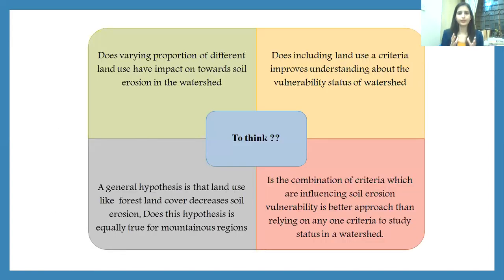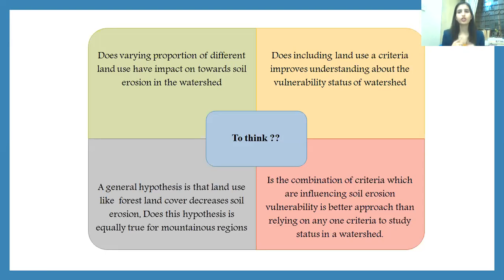We need to think over a few points. There is a general hypothesis that if land use is forest area, it checks erosion — and that is true. But does this hypothesis hold equally true for mountainous regions as well? Does the varying proportion of different land uses have impacts on soil erosion vulnerability in different watersheds? We also need to think about whether including land use as a criterion improves our understanding of the vulnerability status of the watershed, and whether a combination of criteria or just a single criterion is the better approach.